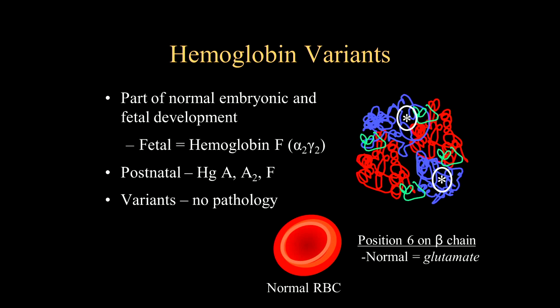Embryos and fetal development have different proteins within the hemoglobin molecules compared to the normal adult. In addition, there are postnatal variants — hemoglobin A, A2, and F. And there are also variants where there actually is no clinical pathology.